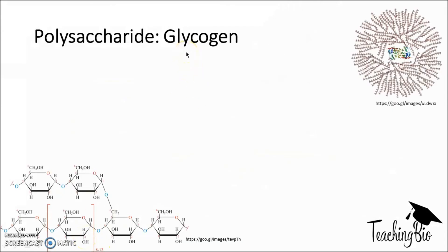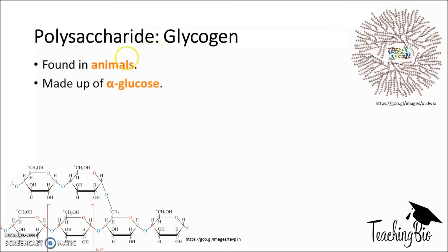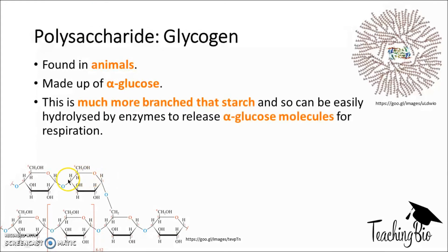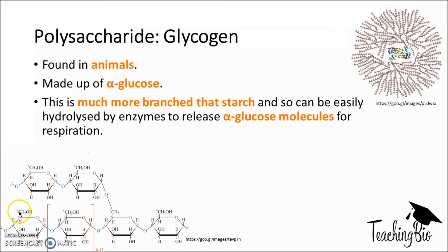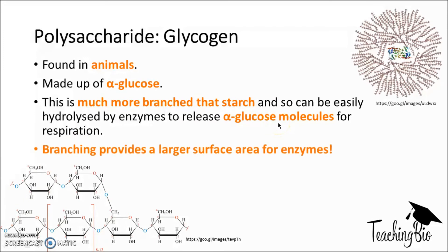Glycogen is basically the starch equivalent but for animals. It's made up of alpha glucose molecules, with many of these alpha glucose molecules joined together. However, glycogen is even more branched than starch, so we can hydrolyze the glycosidic bond to release alpha glucose molecules at an even quicker rate. Again, the branching produces a larger surface area for enzymes.